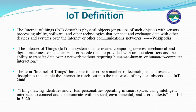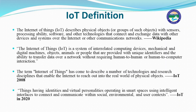The Internet of Things is a system of interrelated communicating devices. These devices can be mechanical or digital machines, objects, animals, or people that are provided with unique identifiers and the ability to transfer data over a network without requiring human-to-human or human-to-computer interaction. The term IoT has come to describe technologies enabling the internet to reach out into the real world of physical objects — things with identities and virtual personalities, operating in smart spaces using intelligent interfaces to connect and communicate within social, environmental, and user contexts.